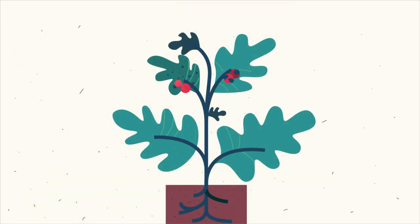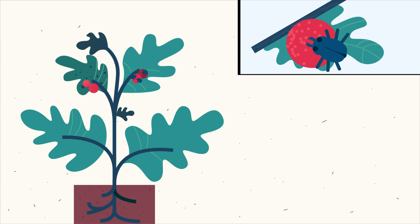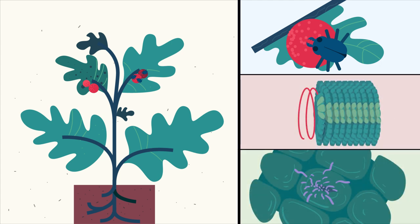But just like humans and animals, plants can get sick and result in visible symptoms. And like humans, plants can be attacked by insects and pathogens, such as viruses, bacteria and fungi.